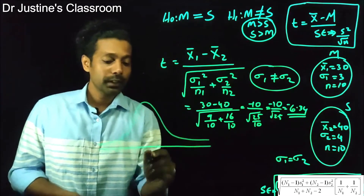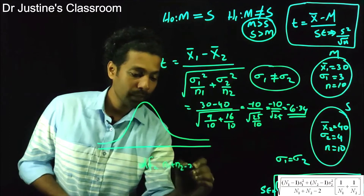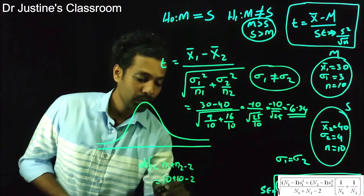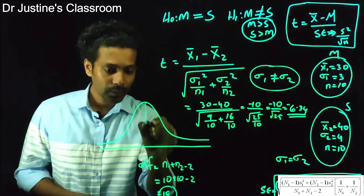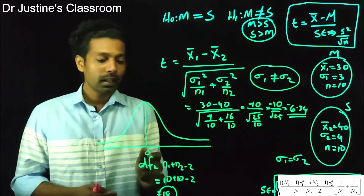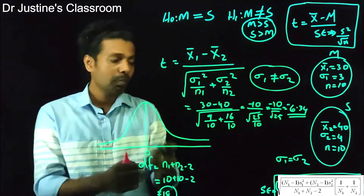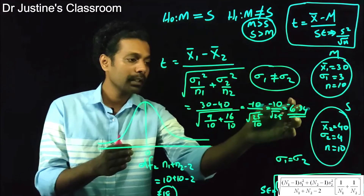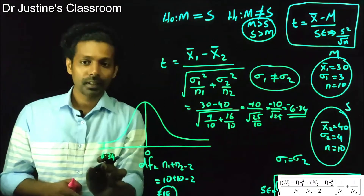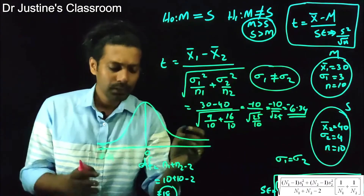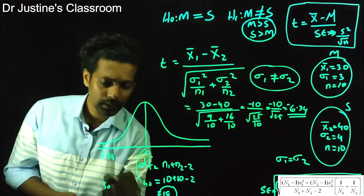We use a t-curve with degrees of freedom = n₁ + n₂ - 2 = 10 + 10 - 2 = 18. The center of the t-curve is zero. Our result tells us that the value of 30 is 6.34 standard deviations away from the mean of 40 on this distribution.